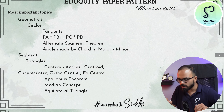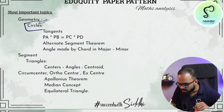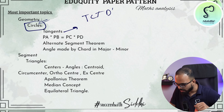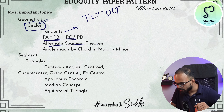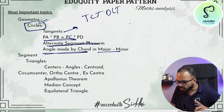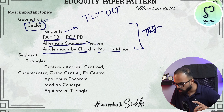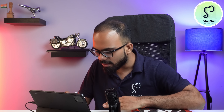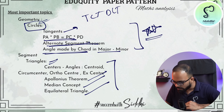In geometry, the first priority is circles — circles within circles, tangents, TCT, DCT, PA × PB = PC × PD, the alternate segment theorem, and angles made by a chord in major and minor segments. These are the focus areas in geometry. Then go to triangles — be thorough on centroid, circumcenter, orthocenter, and incenter. Focus on Apollonius theorem, median concepts, and equilateral triangle concepts.